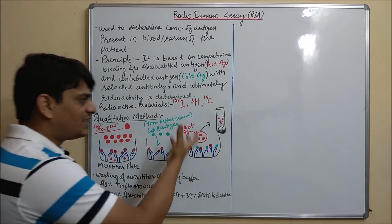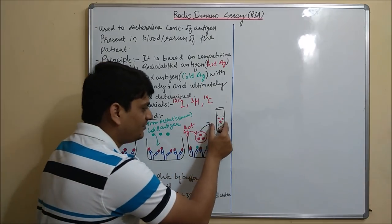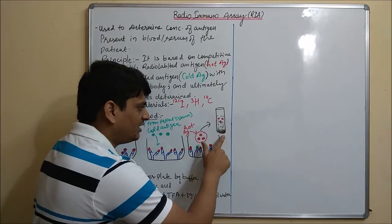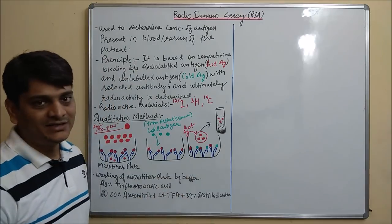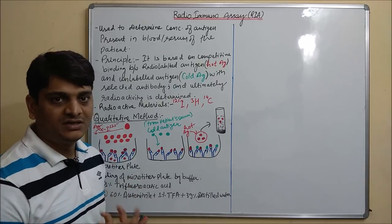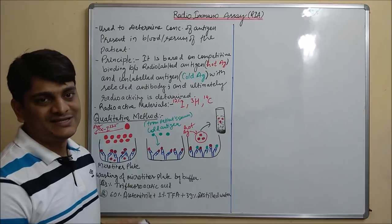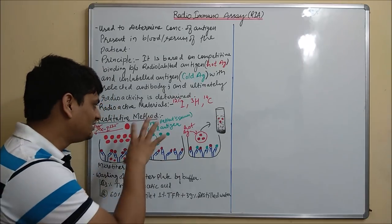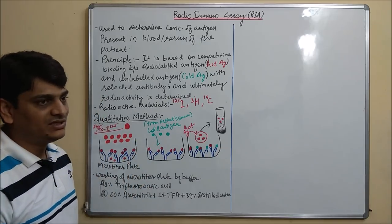All hot antigens are replaced by cold antigens (shown in green color). The hot antigens are washed out using buffer solution, and the washing solution is collected in a test tube. After centrifugation, the supernatant liquid is analyzed for radioactivity. The hot antigen will be present in the supernatant liquid, and by observing it under radioactive counters we can determine the presence or absence of that particular antigen. This is the basic methodology for the qualitative method.